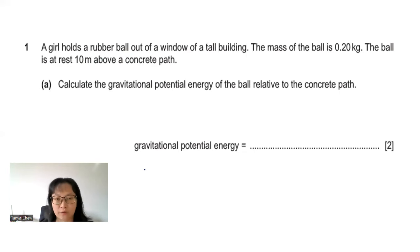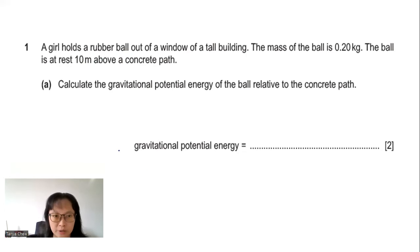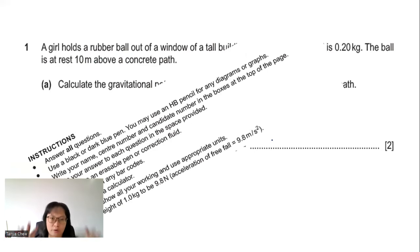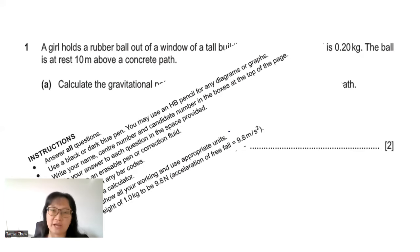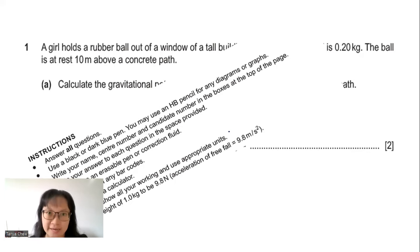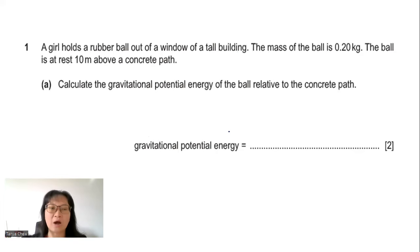Before giving the equation for gravitational potential energy, I want to remind you about the instruction on your paper. Look at the last instruction — the acceleration of free fall has been changed to 9.8 m/s² since the start of 2023. So you need to use the new value of 9.8 m/s².